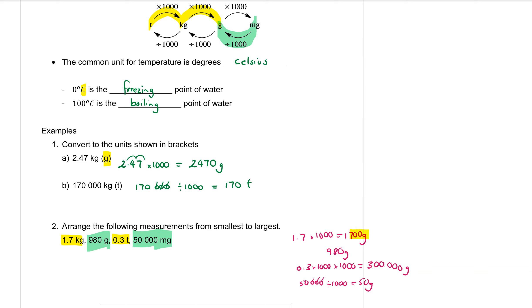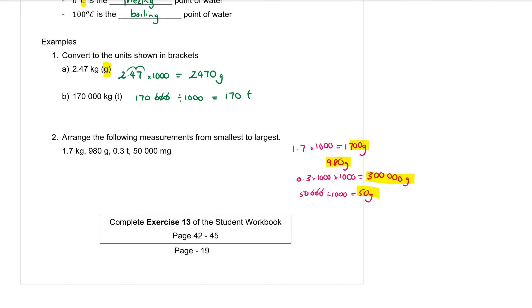Now that they are all in grams, these are the numbers I'm trying to compare. I want to put them in order from smallest to largest but I want to write them in the form that they were when we started the question. The smallest one that I've highlighted in yellow is the 50 grams, which in the question was the 50,000 milligrams. The next biggest one is the 980 grams. The third biggest one is the 1,700 grams which is my 1.7 kilograms. And that means that the biggest one is the 0.3 tons.